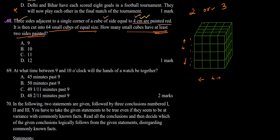At least two sides means two sides or three sides painted. In a cube, the maximum number of sides visible on a small cube is three, at the corners. We can see only the three adjacent sides of the cube. In the question, three sides adjacent to a single corner are painted red. We assume those three visible sides are fully painted red and count the small cubes with at least two painted faces.